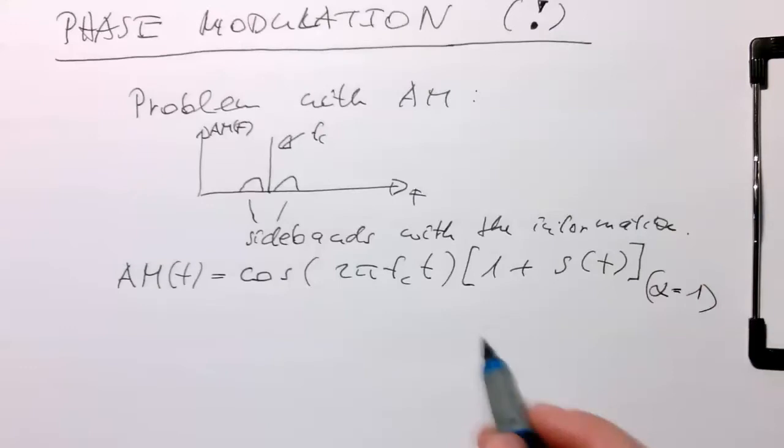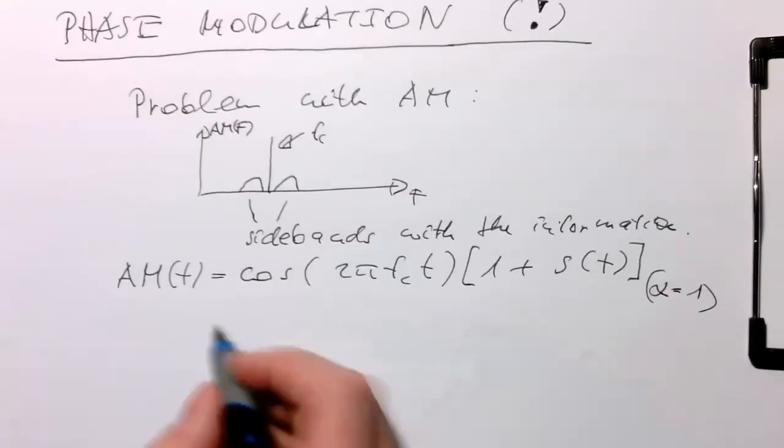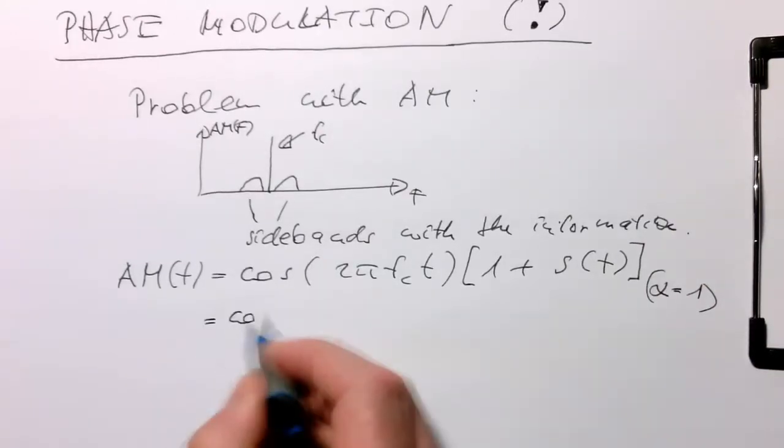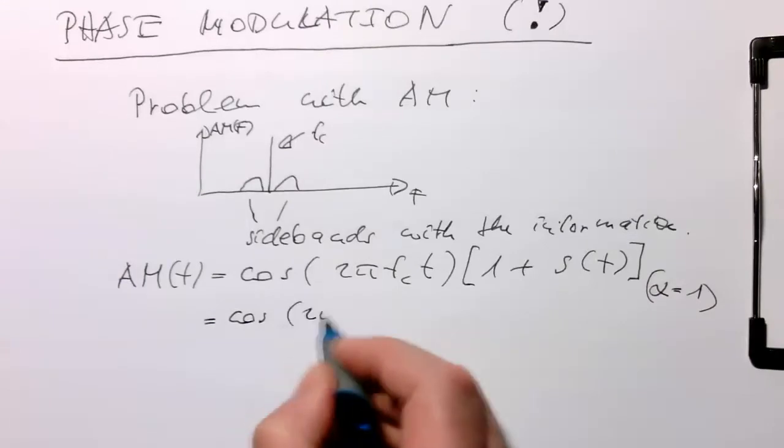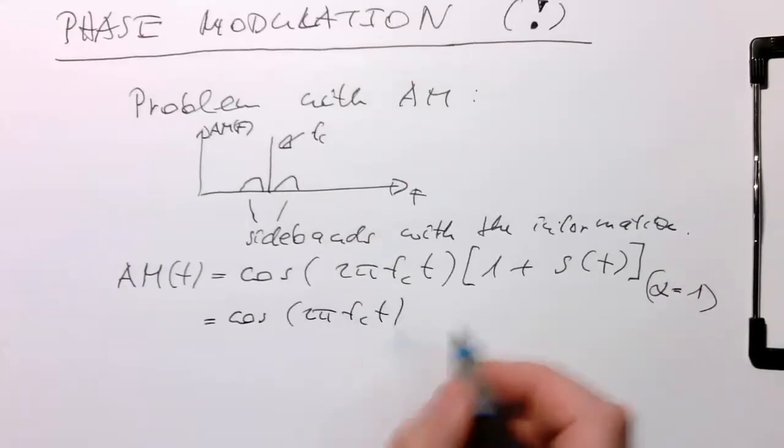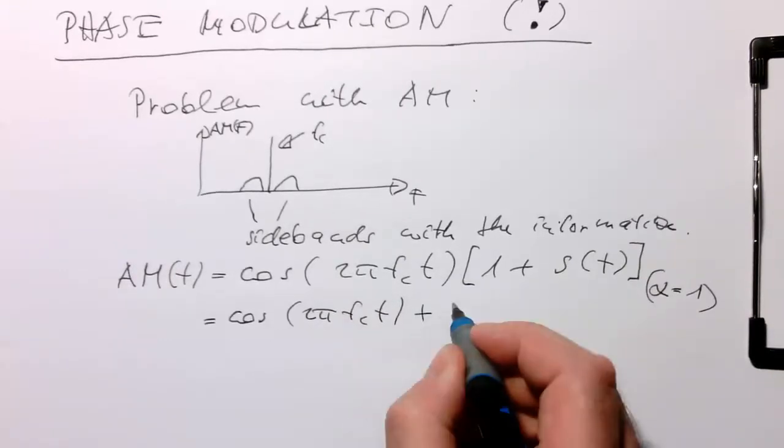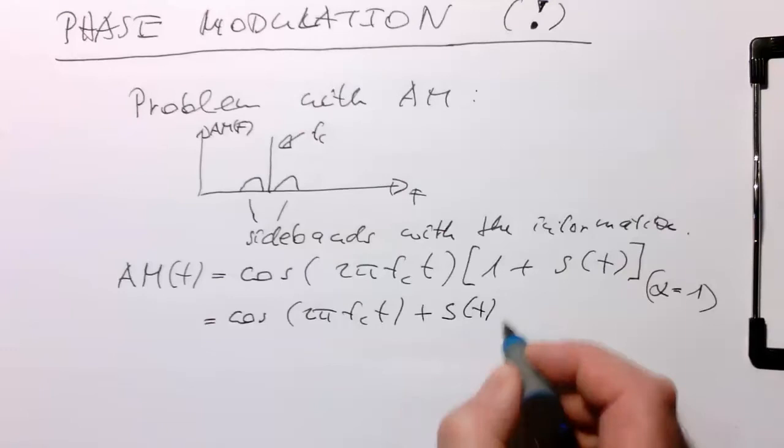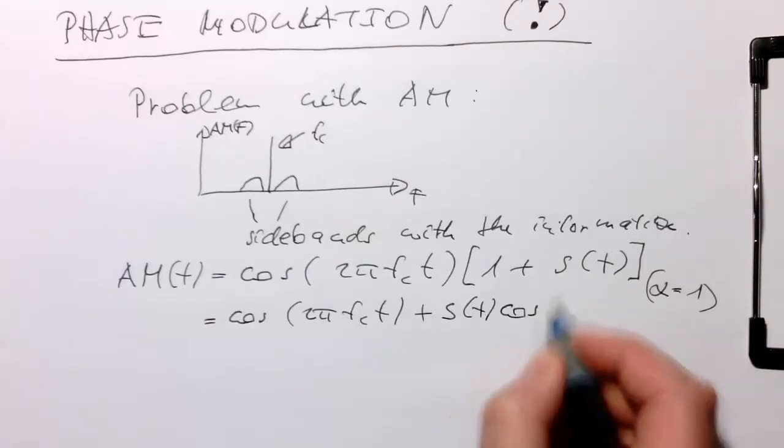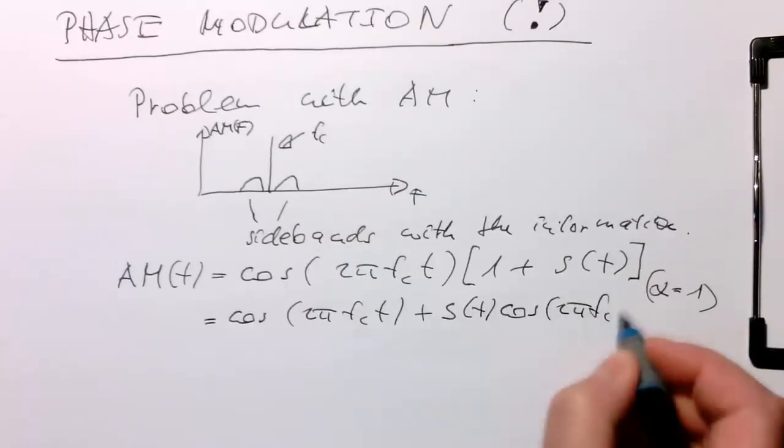And so obviously we can just multiply this out and call this here 2 pi FC T. This is the first term here and then the second term is S of T multiplied cosine 2 pi FC T.